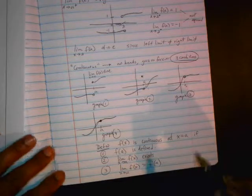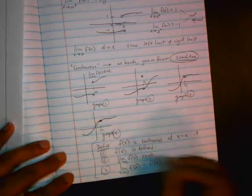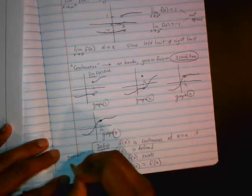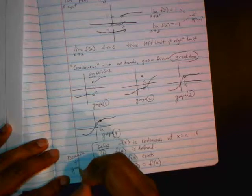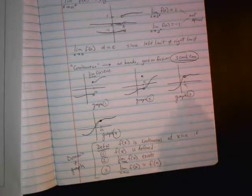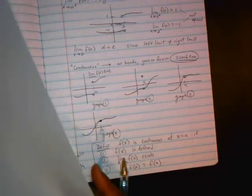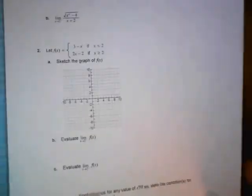Typically, continuity, we look at graphs or we look at domain. So check for domain and look at the graph to figure out where a function is continuous or not. So let's get started with our worksheet. Go ahead and print that off if you haven't done so, and follow along with me.